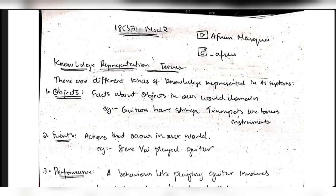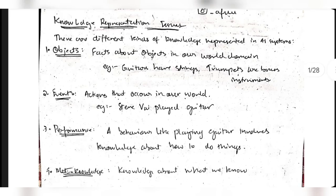Basically we have to represent knowledge. If you have knowledge about something and need to represent it, first you need to know the main components. There are four different kinds of knowledge representations in AI systems: the first is objects, second is events, third is performance, and fourth is meta-knowledge.